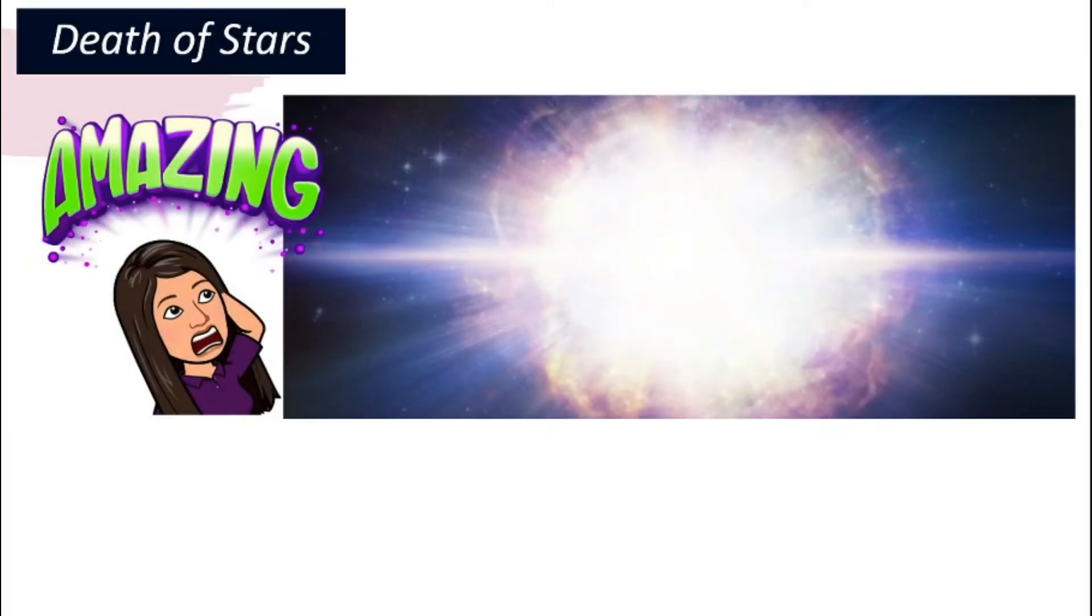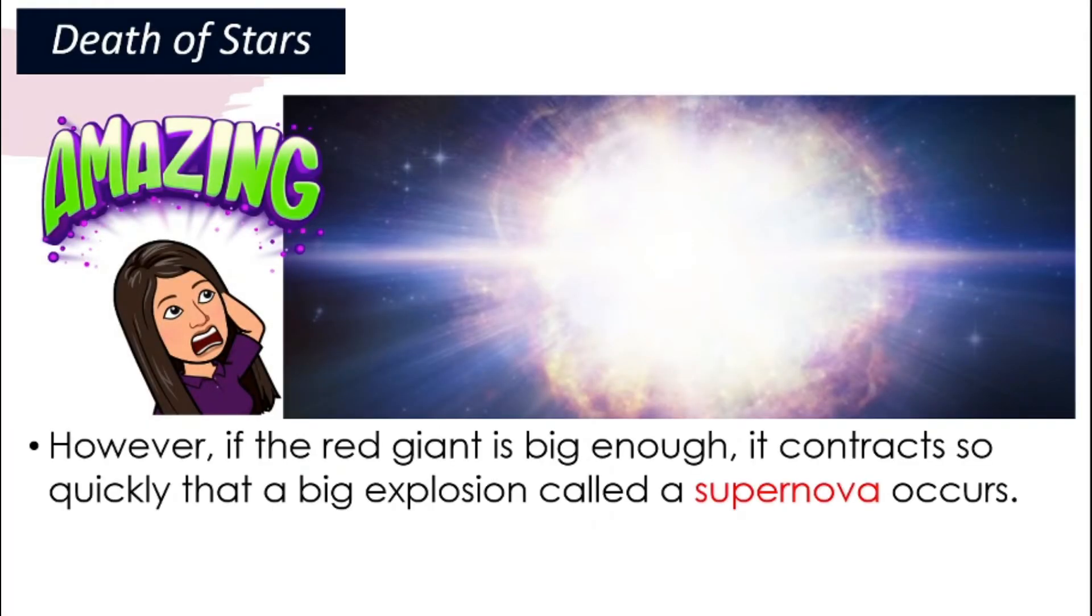What if it is very big? It will actually suddenly contract very quickly, meaning it will shrink. It will become smaller very quickly and then explode. This is a very big explosion and it has a name. We call it the supernova.